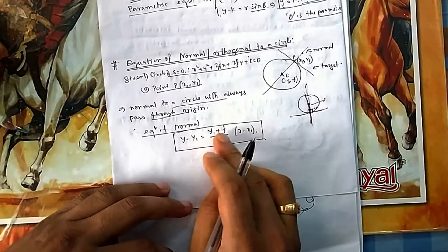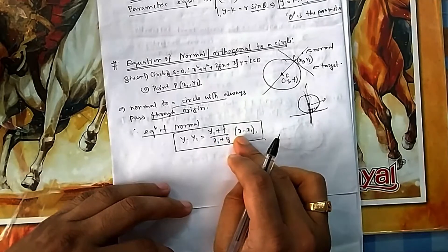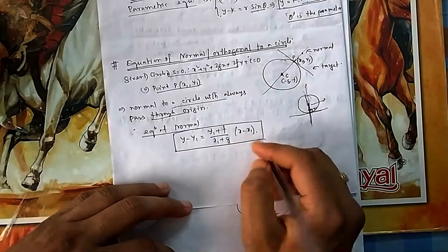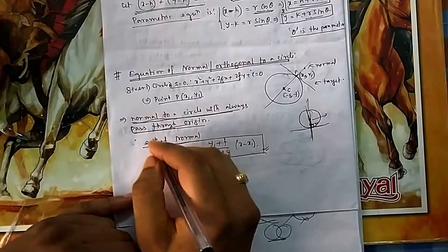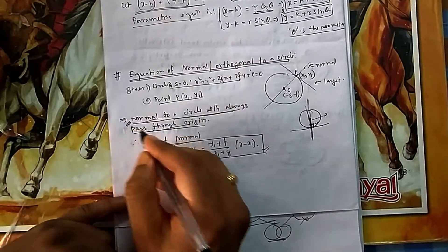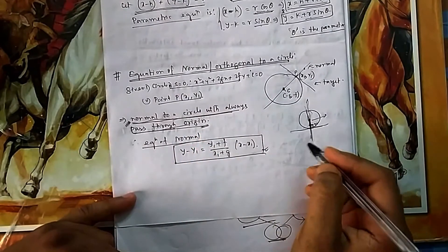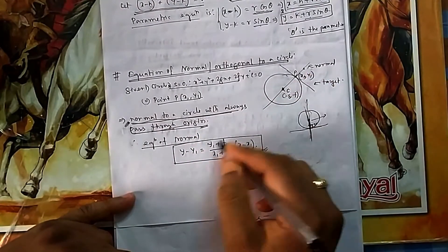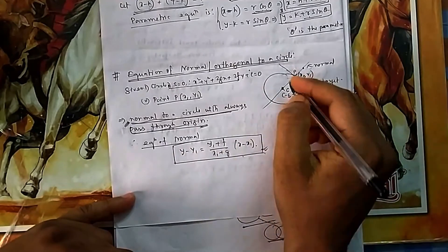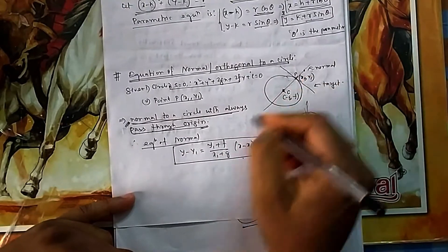You have a point, you have a center—so two points you have. You can find the equation using two-point formula: (y - y₁) = [(y₂ - y₁)/(x₂ - x₁)](x - x₁). Using that formula, you can find the equation of the normal. This you have to always remember: normal to a circle at any given point will always pass through the center. That is a very important step. If you know this, then no need to remember this formula—you can solve it in exam also. Two points you know, you can find the equation.